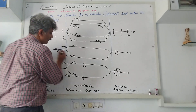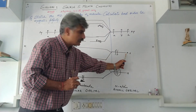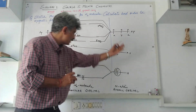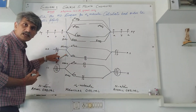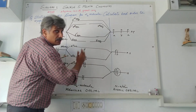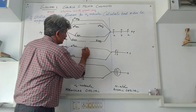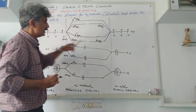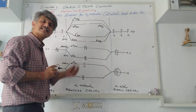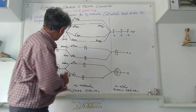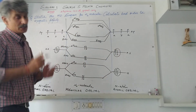For the 2s orbital: one electron from the first nitrogen's 2s fills into σ2s, then the second nitrogen's 2s electron also fills into σ2s, forming a pair. The remaining 2s electrons cannot enter σ2s (already full), so they jump to the higher energy σ*2s orbital, pairing up there as well — again four electrons filled.